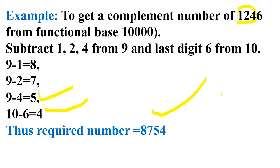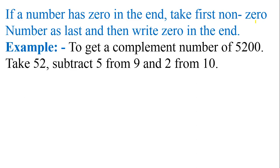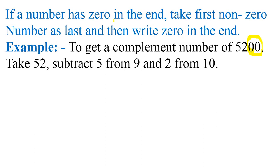Let me show you a different situation. In all three examples discussed so far, there was no zero at the end of the numbers. So let me take you a little further. If a number has zeros at the end, take the first non-zero number as the last and then write zeros at the end. For example, you need to find the complement number of 5,200 with base 10,000. You have zeros at the end here.